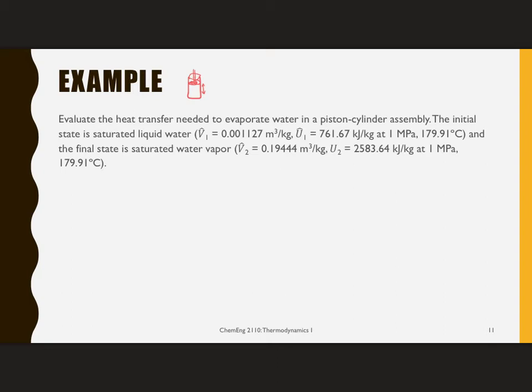So I want to figure out the heat transfer for evaporating water in a piston-cylinder assembly. The initial state is saturated liquid water, and in this case, the volume and internal energy are given. You could look this up using the data tables, but for simplicity, the information is provided. The final state is saturated water vapor, and again, properties are given. All of this is happening at 1 megapascal. So I am not changing the pressure, but I am going from the liquid state to the vapor state.